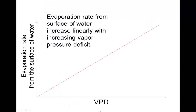The relationship between VPD and evaporation rate is linear. The greater the VPD, the more water-holding capacity for the air, and therefore the more evaporation can potentially occur from the surface of water.